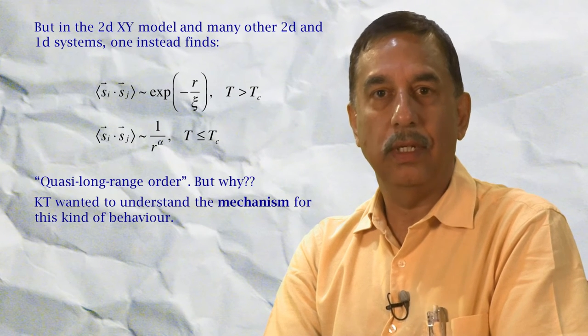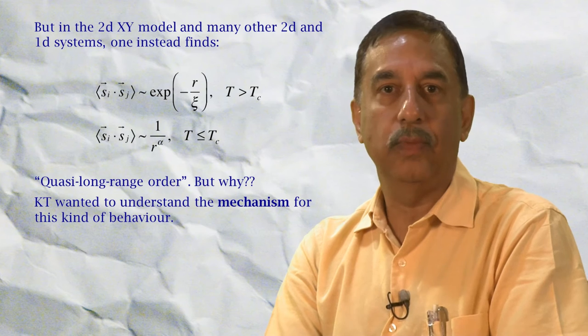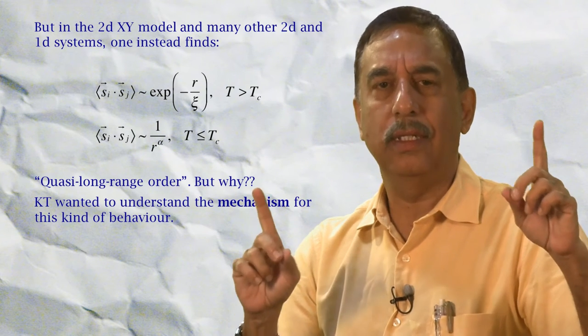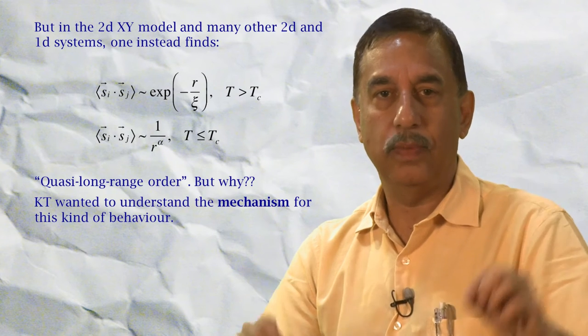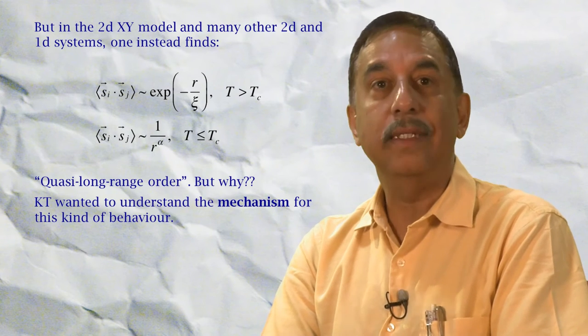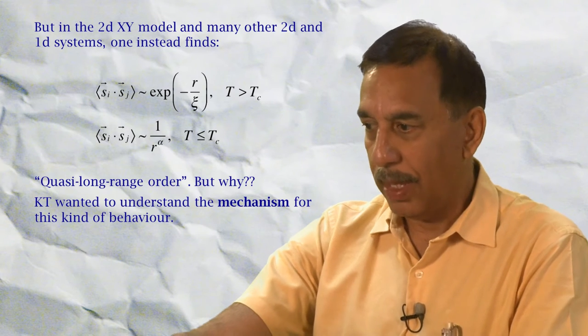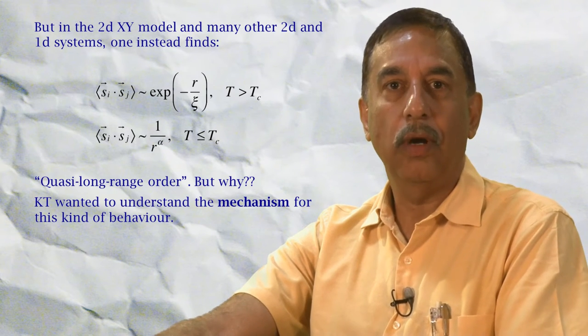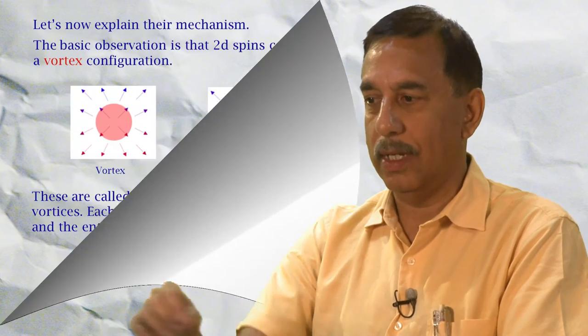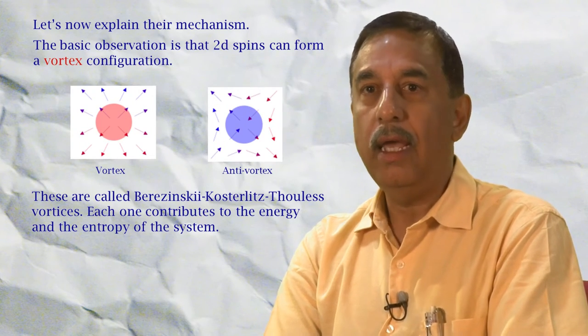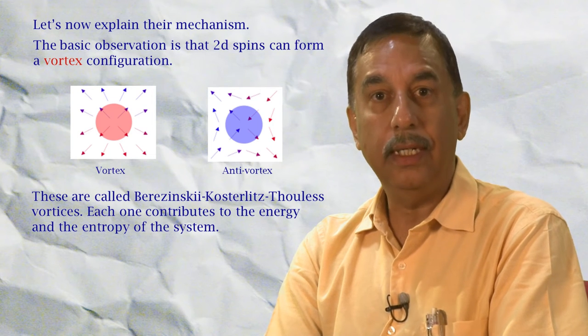So there is a phase transition, but it does not mean that the spins all line up. However, there is some kind of correlation at long distances between different spins, and this is called quasi long-range order. It is a weaker kind of long range order. Kosterlitz and Thouless wanted to understand the mechanism for this kind of behavior. And the mechanism they proposed was very ingenious and turned out to have very deep consequences.